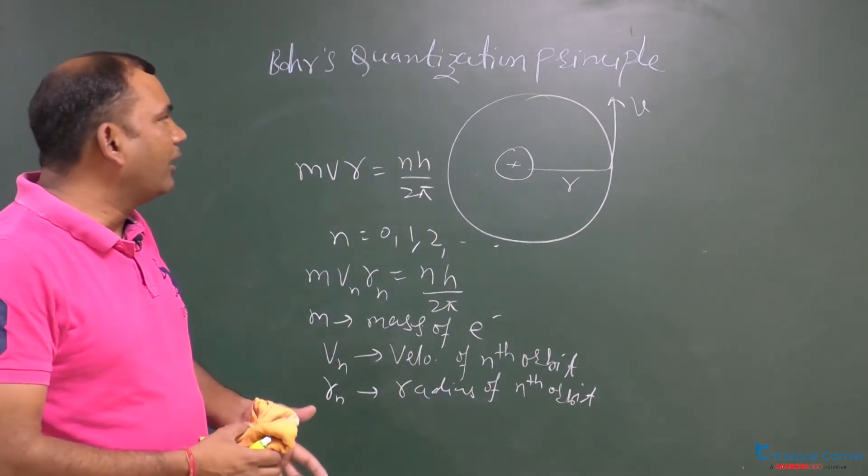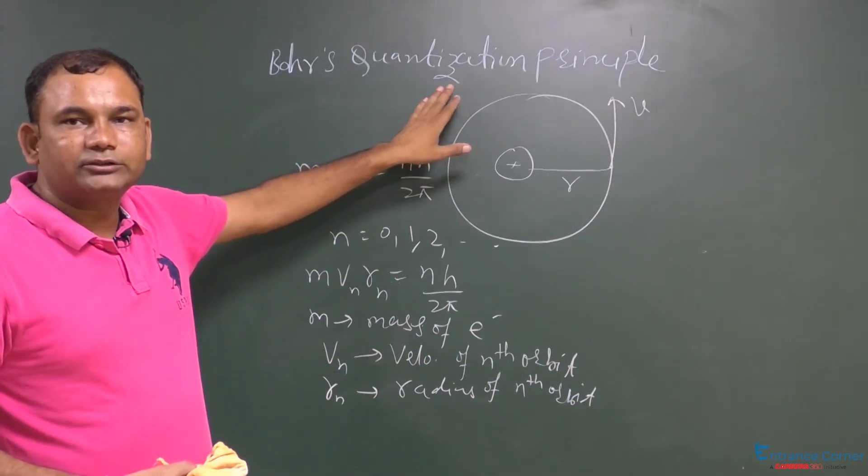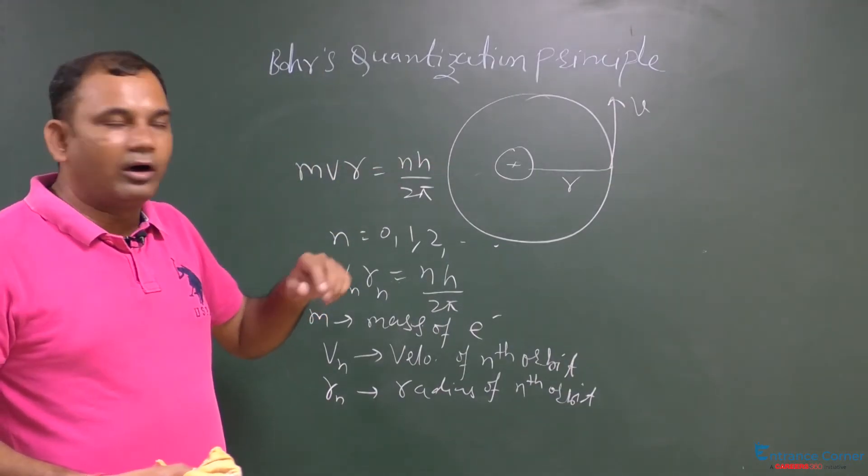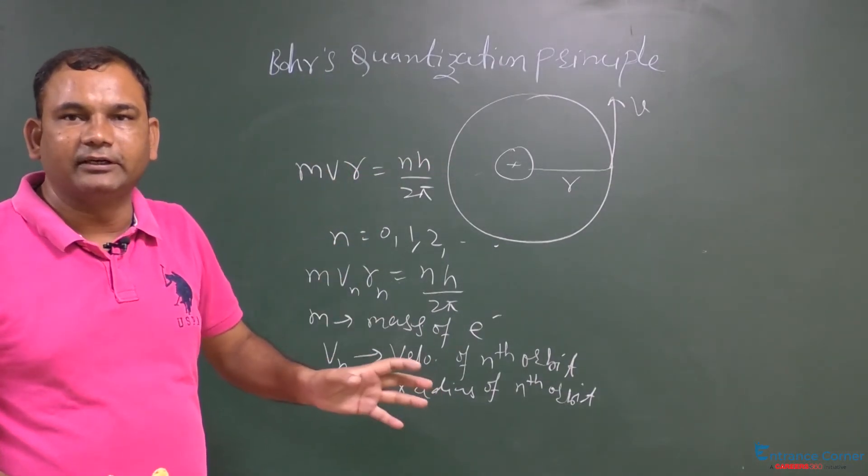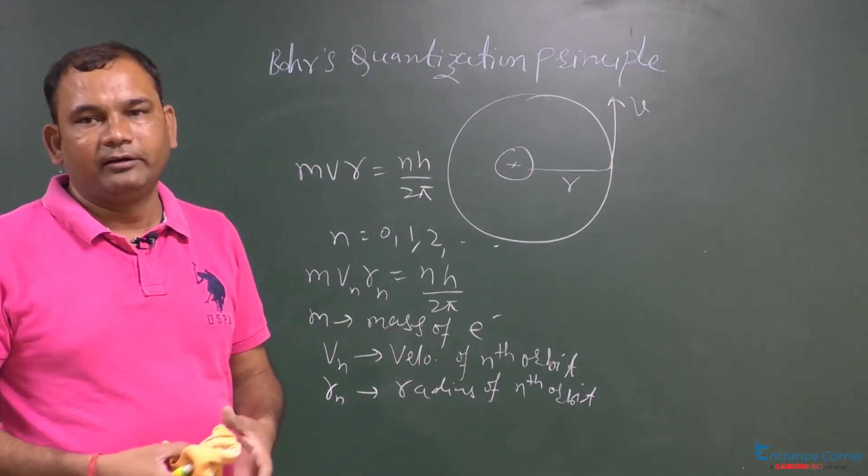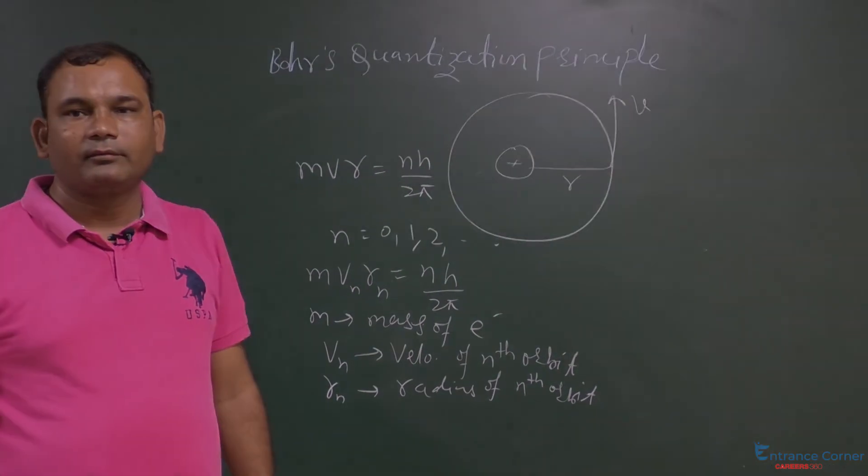So, we can calculate the angular momentum. Why is it called quantization? Because it is an integral multiple. Always n is an integer, not a fraction. That is why it is called quantization principle.